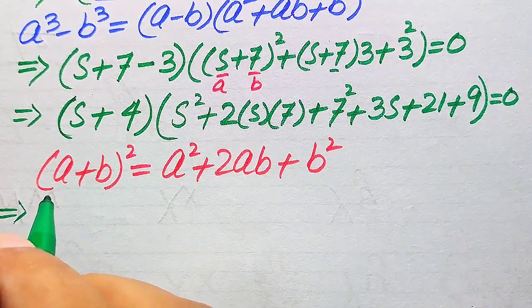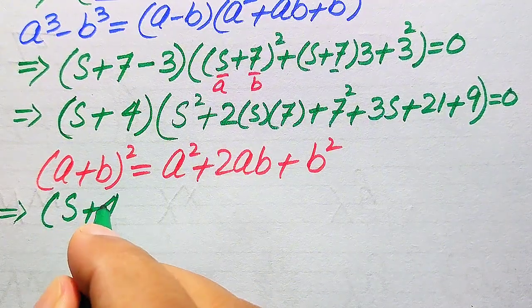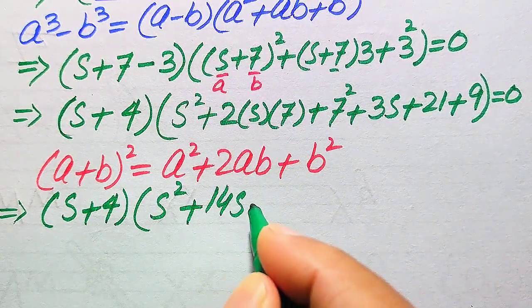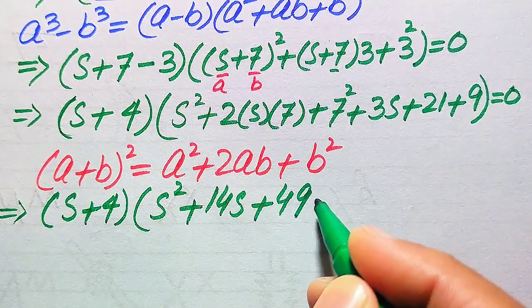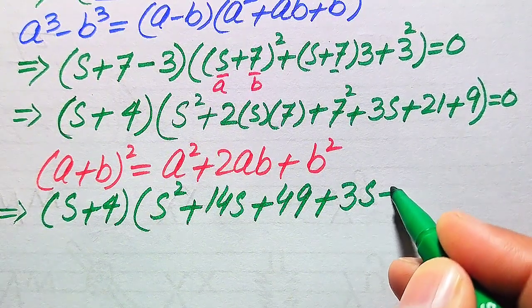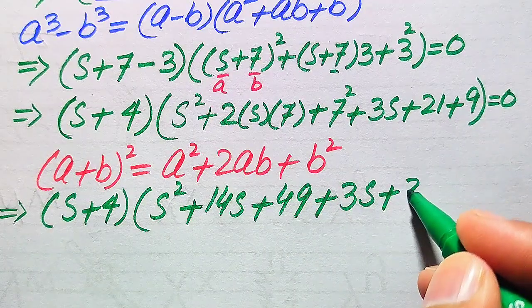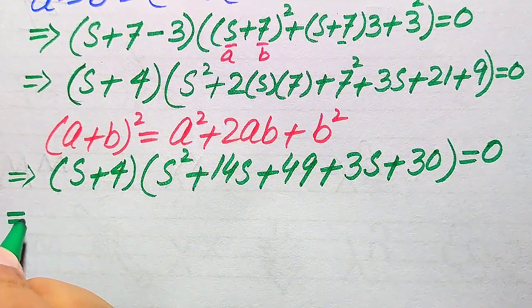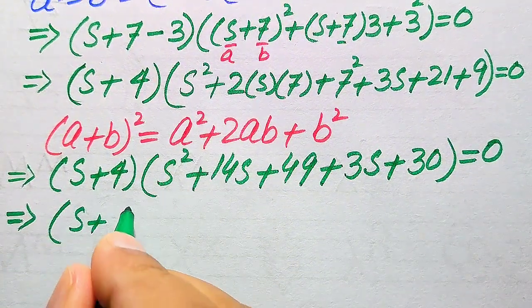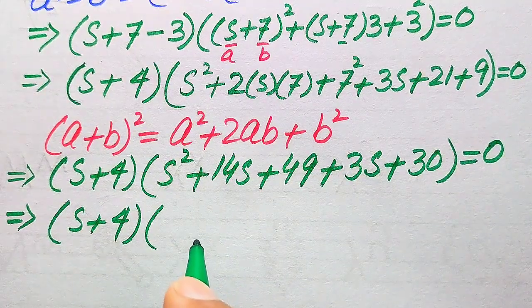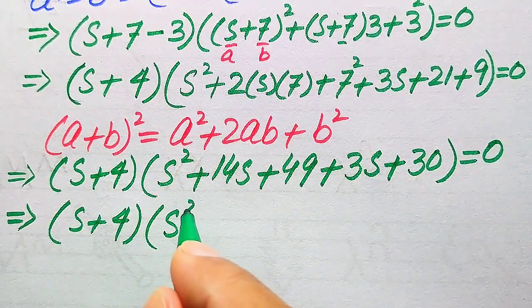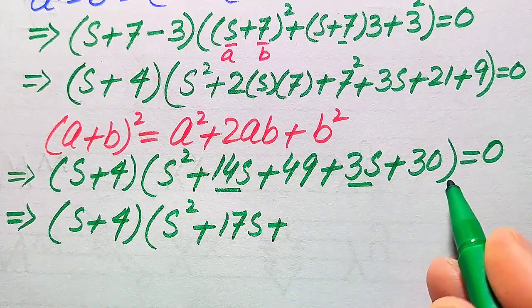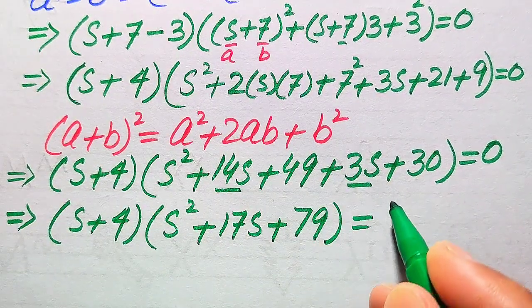Simplifying further inside the bracket: s² + 14s + 3s = s² + 17s, and 49 + 21 + 9 = 79. So the equation becomes (s + 4)(s² + 17s + 79) = 0.